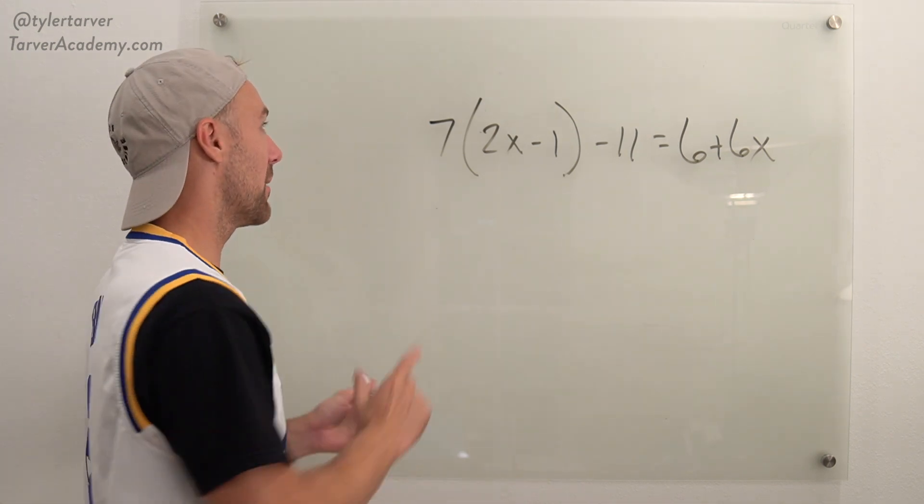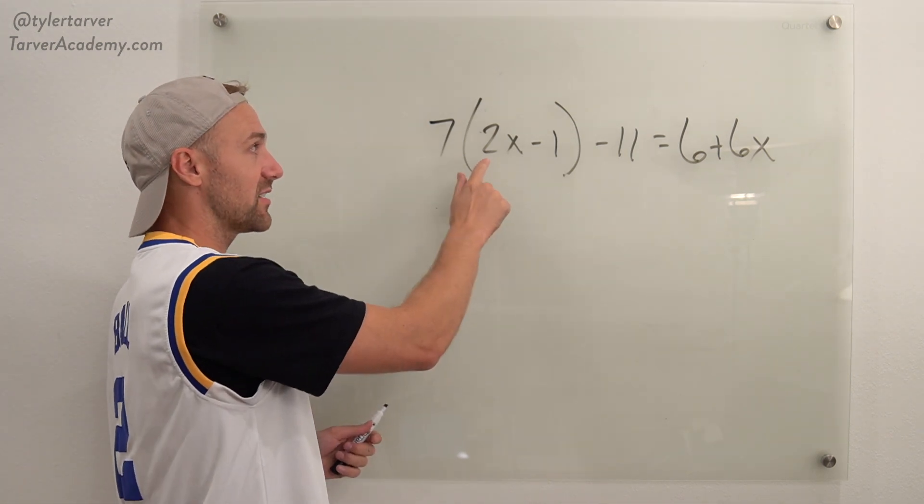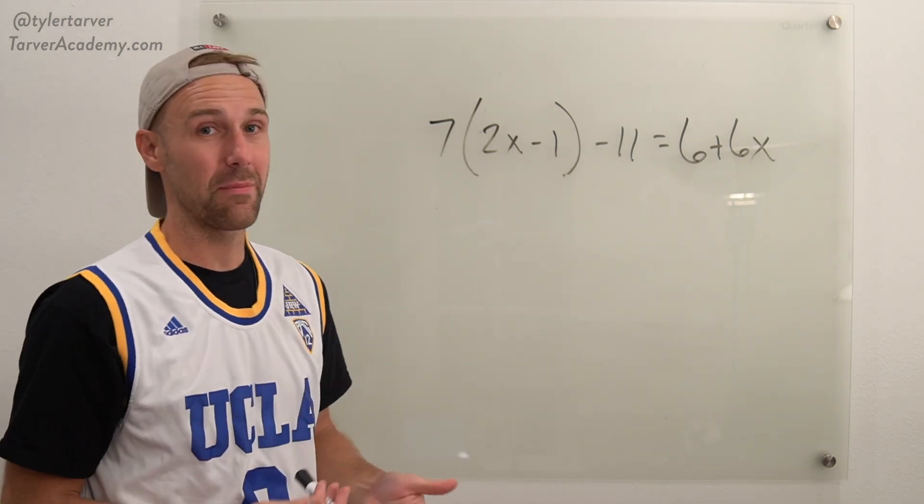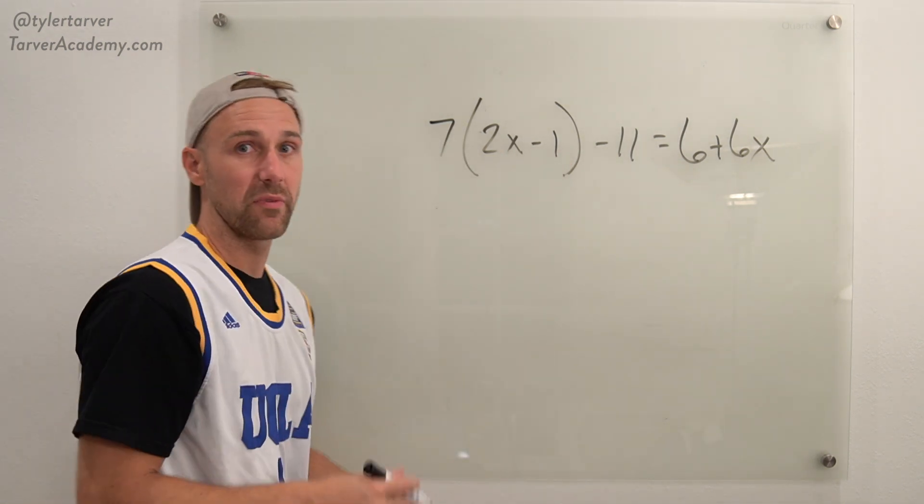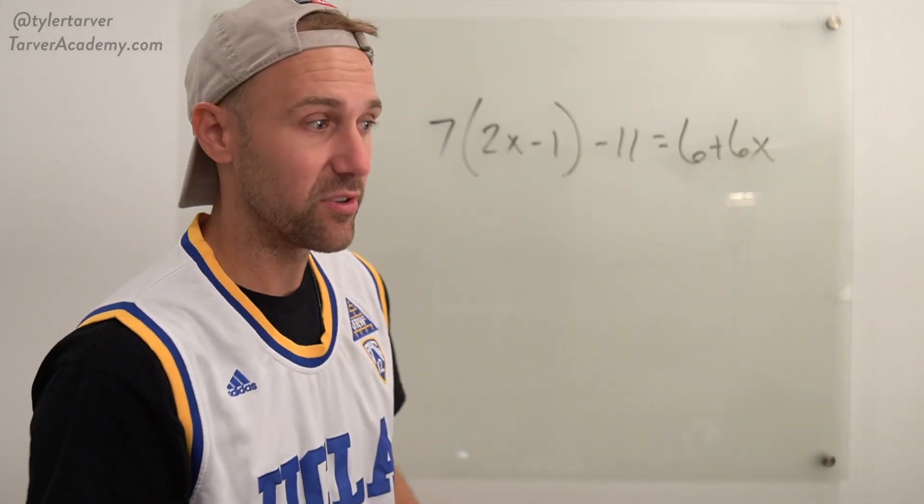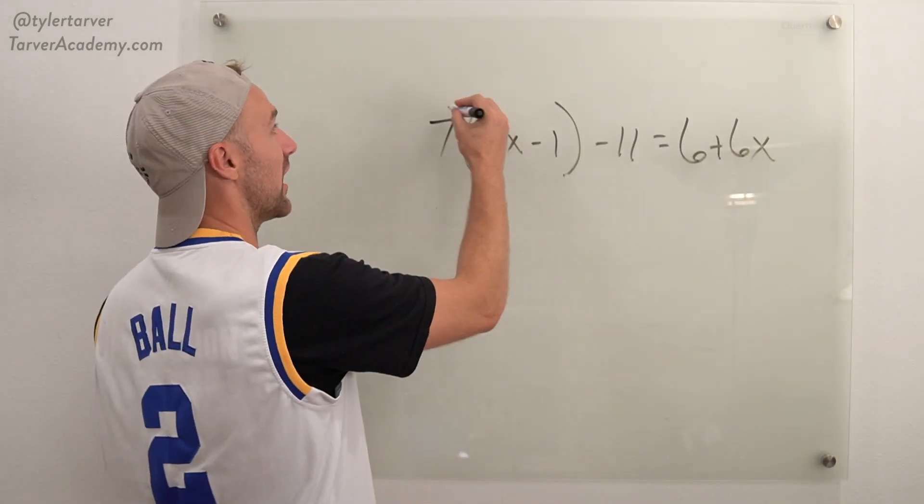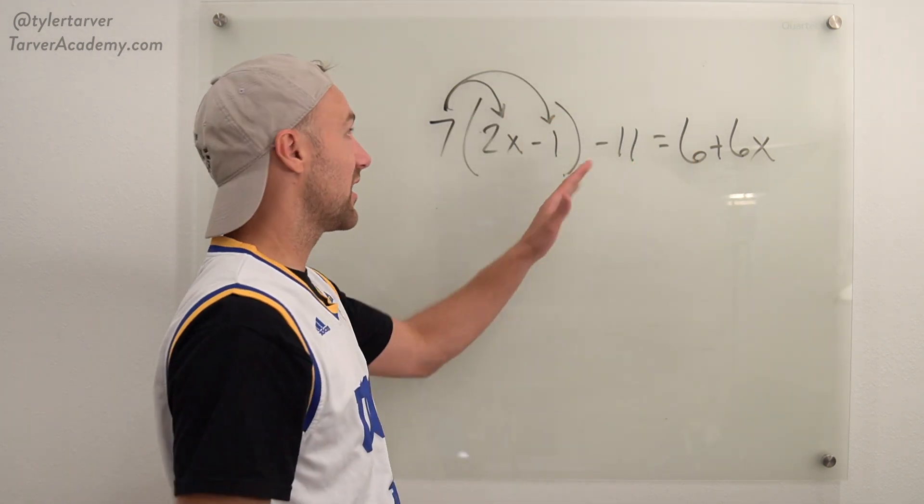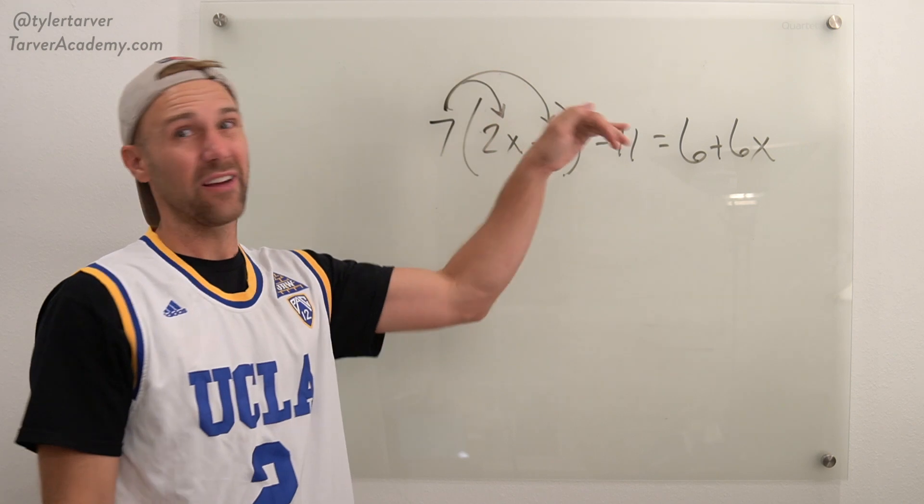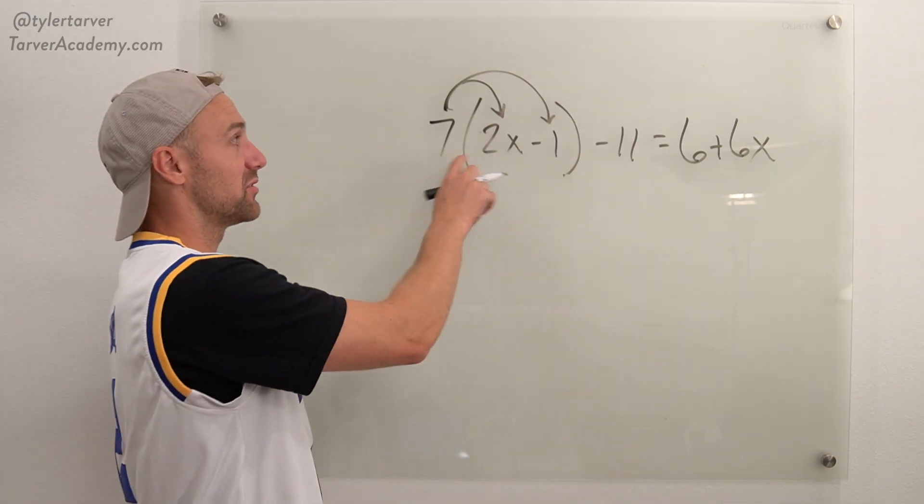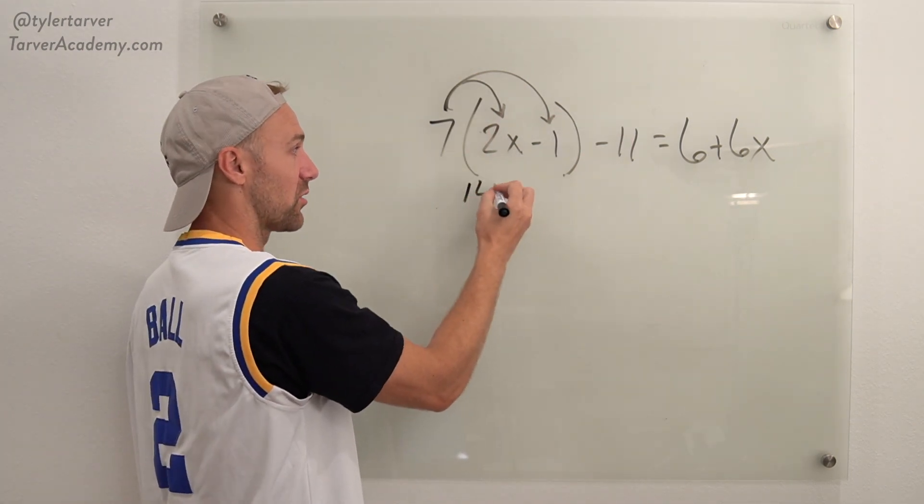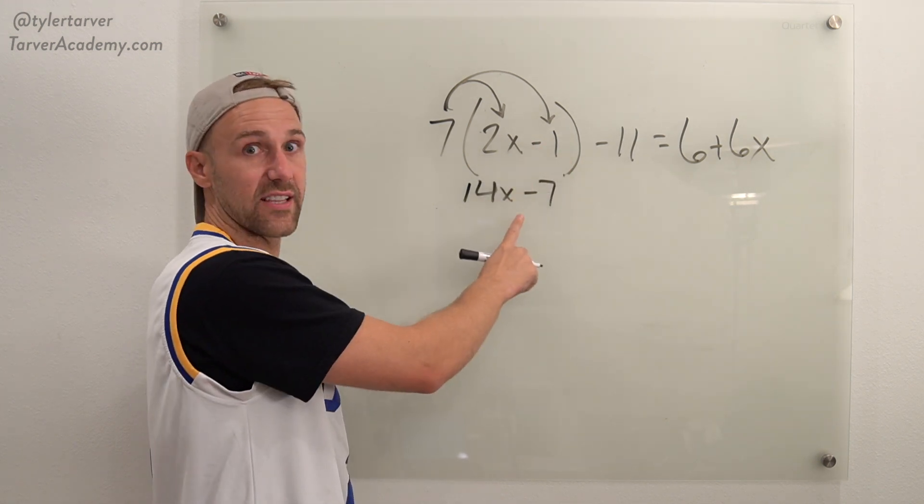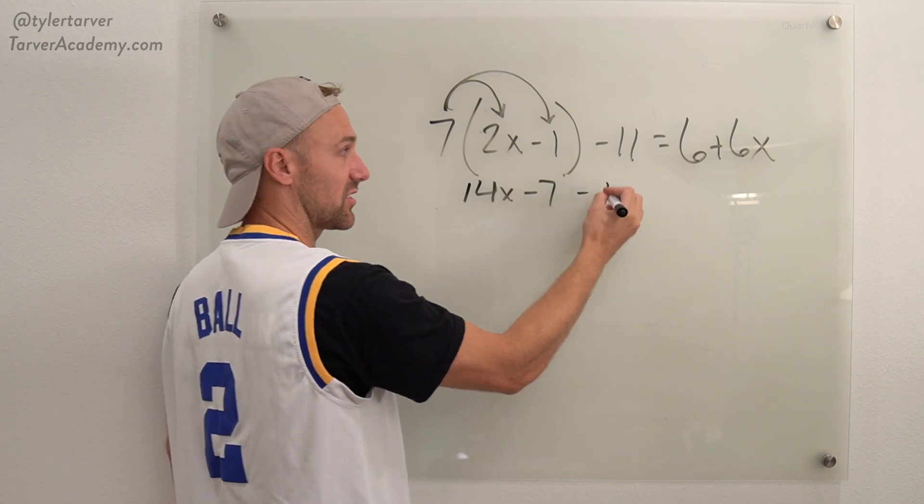Most people mess up by just multiplying the 7 times the 2x, so they get 14x minus 1. That's where they mess up because you have to distribute and you've got to multiply it there and there. So we do 7 times 2x which is 14x and then 7 times negative 1 which is negative 7. Don't forget your signs there guys. Then everything else just comes down.